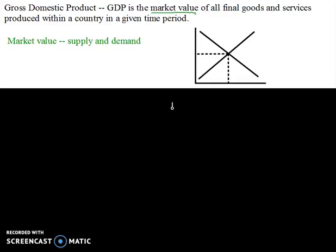Some of the key terms here are market value — the market value of all goods and services produced within a year. The market value of all goods and services is determined by supply and demand, which generates an equilibrium price for the product. We would take the market value or price of apples times all the apples produced, then add the price of bananas times all the bananas produced, and do that for every single good — price times quantity — and add them all up.